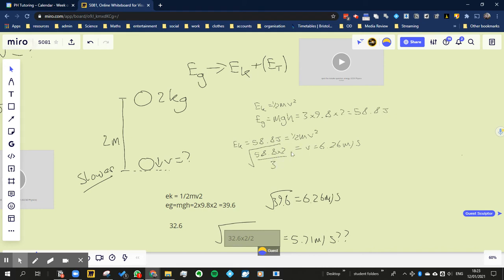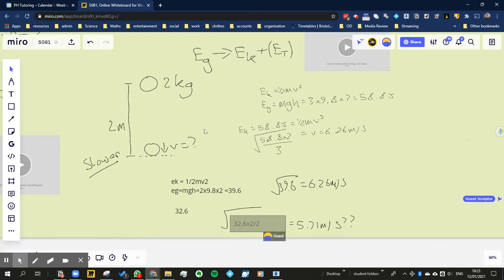You then rearrange the equation to find that velocity is equal to 6.26 meters per second, but then when we did it with a different mass, we found it was also 6.26 meters per second.